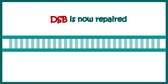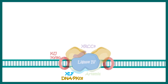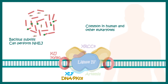NHEJ is really important, and if we take the special example of the immune system, it is critically important. Let me also tell you that NHEJ is very common in humans but not as common in bacteria. In bacteria, NHEJ can be found in those that form spores, such as Bacillus subtilis, and this gives them extra resistance.